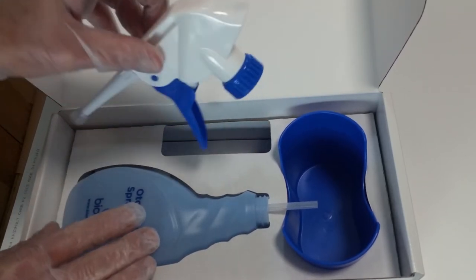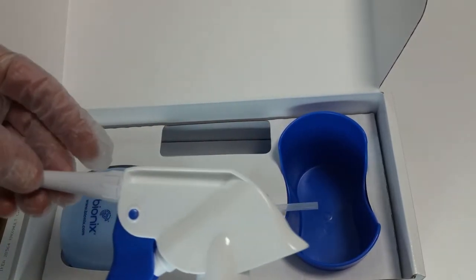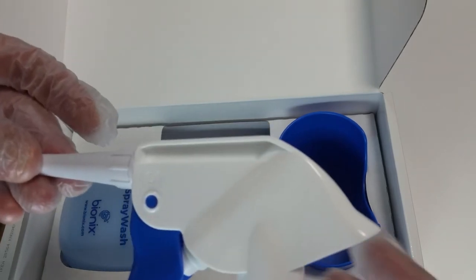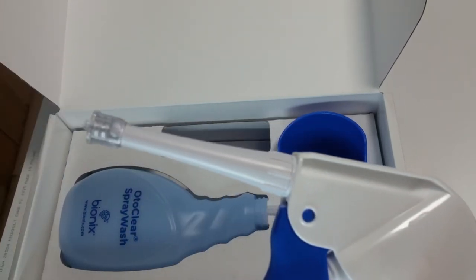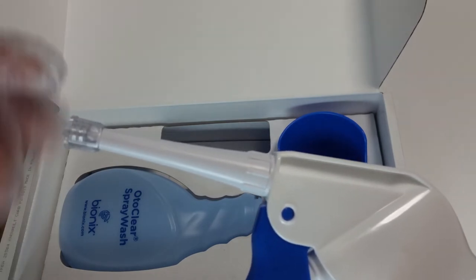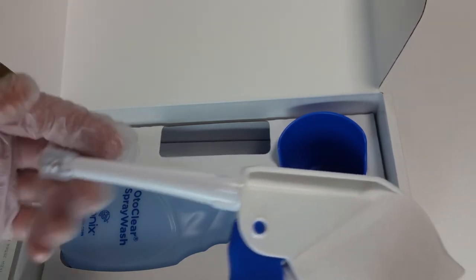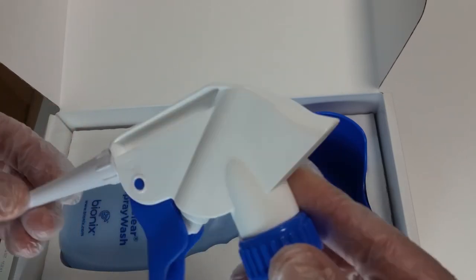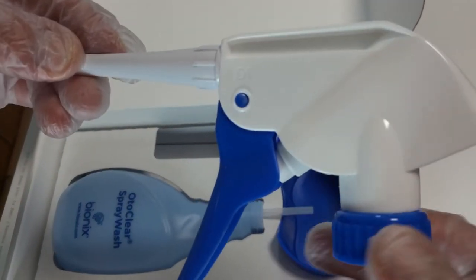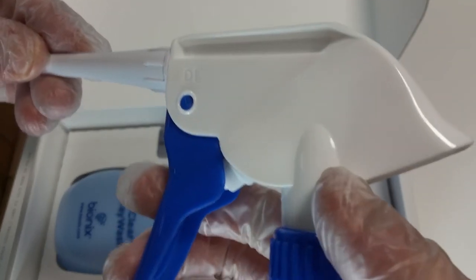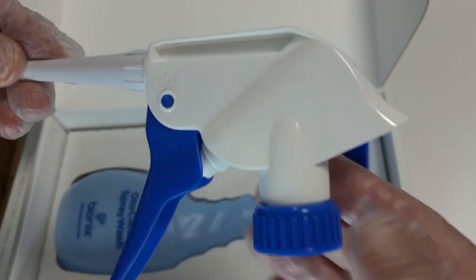This is the spray wash head. It seems fairly sturdy. At the end, this is where you screw the tips on. And that's for screwing the head onto the bottle and the pump handle.